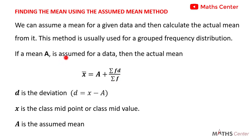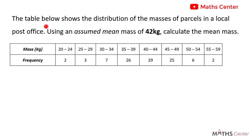When using the assumed mean method, the actual mean is equal to the assumed mean plus sigma fd divided by sigma f, where d is the deviation obtained by subtracting the assumed mean from the x values. Now let's apply this to a question. The table below shows the distribution of the masses of parcels in a local post office. Using an assumed mean of 48 kilograms, calculate the mean mass.